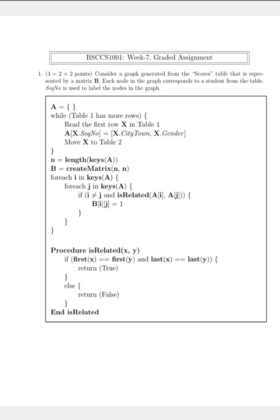We initialize a variable N with the value which is the length of the keys of A, which means it stores the number of keys in A. We also create a zero matrix using the command 'create matrix of N by N', which means it has N rows and N columns.